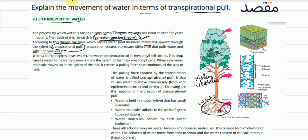When a leaf transpires and loses water, the water concentration of its mesophyll cells drops. You can see the leaf's mesophyll cells here where transpiration occurs. As transpiration continues and water disappears, what happens in the leaf's mesophyll cells?